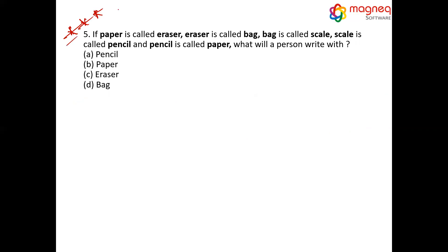I hope it is clear. This is one of the wonderful questions. Most of the people will say answer is paper. But that is one of the trapping answer here. What is the question he is asking? If paper is called eraser, eraser is called bag, bag is called scale, scale is called pencil, pencil is called paper. Now what is the question he is asking? What will a person write with? The person write with pencil. But here I cannot fix my answer as pencil. Here the information is given that pencil is called paper. Your final answer for this question is paper. Pencil is one of the trapping answer here.